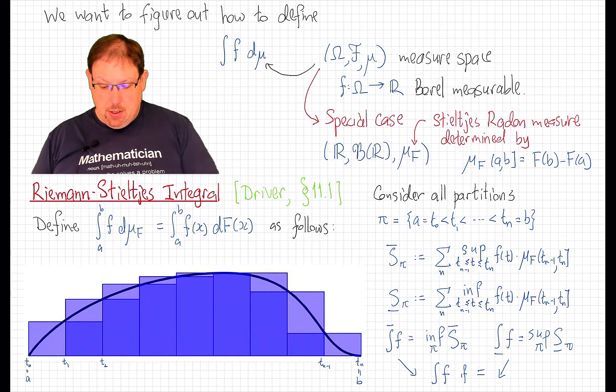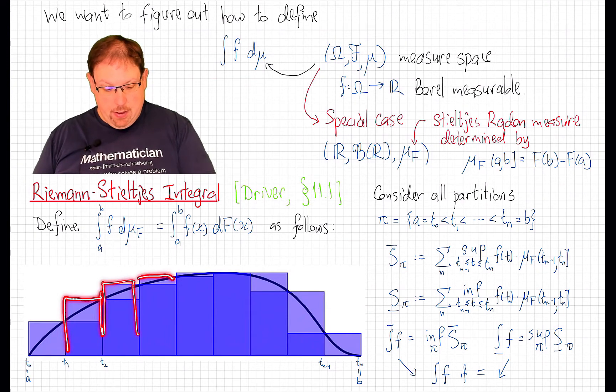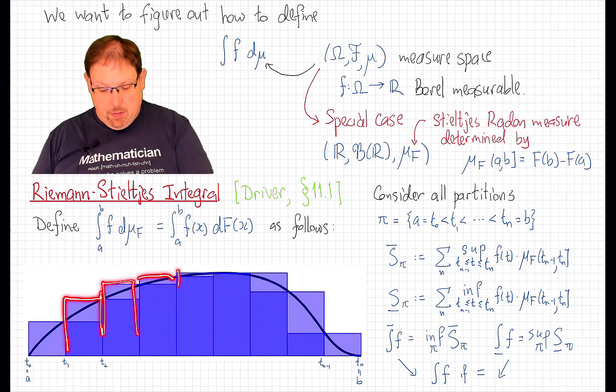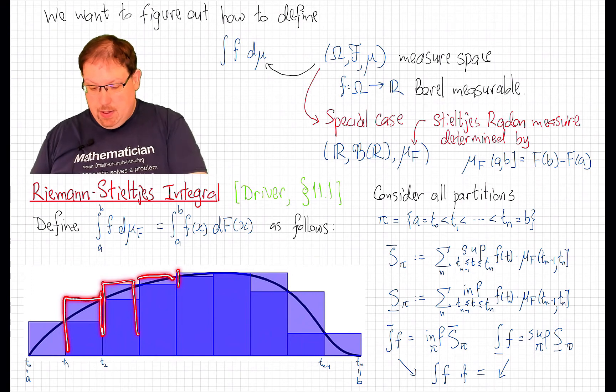The upper sum and the lower sum. That is, we sum up the areas of the tall rectangles, the supremum of the function on the intervals, where the base of the rectangle is given length equal to the difference of F at the endpoints.